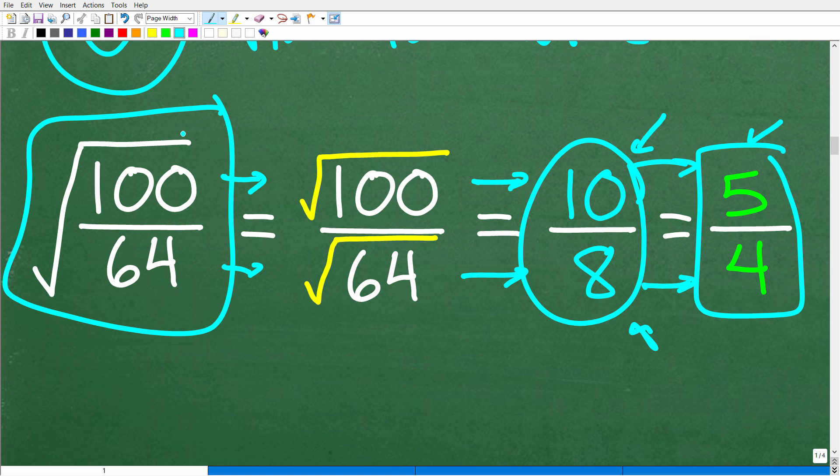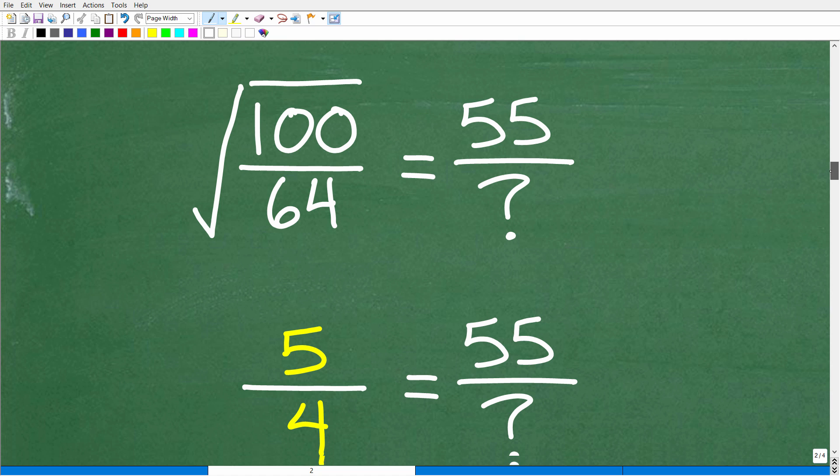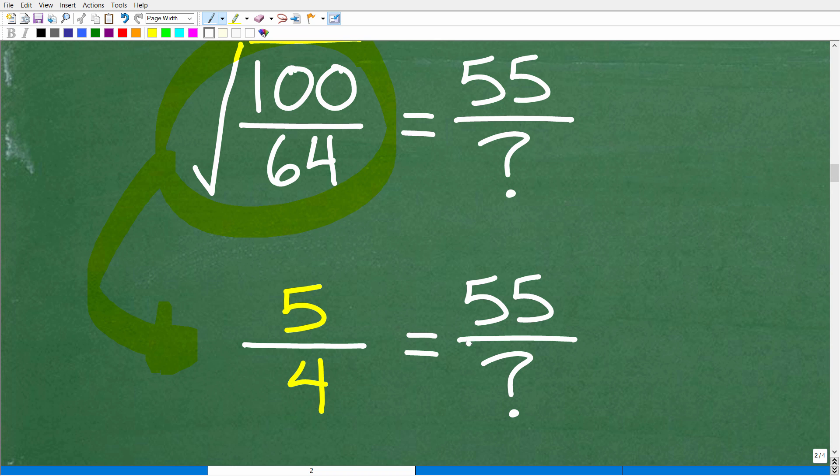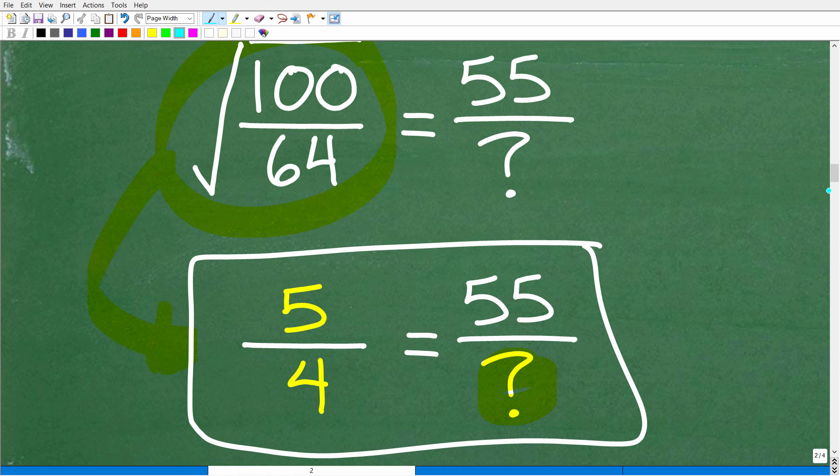All right. So instead of the square root of 100 over 64, let's replace all this stuff right here with this lovely little fraction, 5 over 4. And now this becomes a lot easier to solve. So instead of this problem right here, because we have this knowledge of working with square roots, we can just replace this entire numeric expression, the square root of 100 over 64, as 5 over 4. So this now is our problem. 5 over 4 is equal to 55 over what? So this is a much easier problem to solve. So let's go ahead and talk about what to do here because we have this question mark and we're going to get into something called proportions.